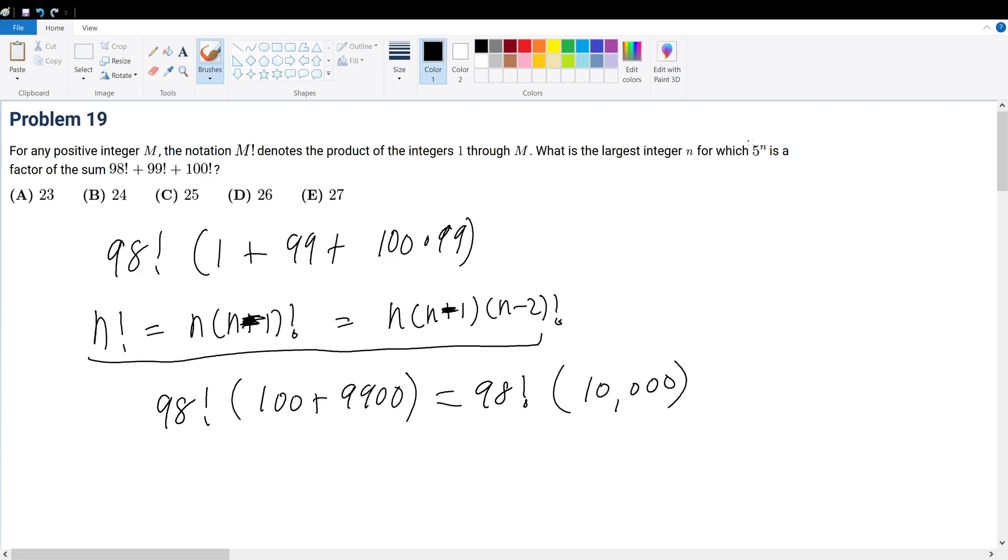So basically, what we're trying to find here is 5 to the n. Basically, what is the largest power of 5 from this term? Well, to do that, we can factorize each term separately.